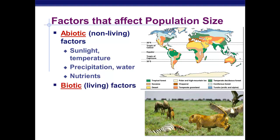There are also living things that can make a population bigger or smaller. This includes a lot of what you looked at before — interactions between species: food, competition, predators, and diseases. Now, diseases are not always caused by living things, but they often are, so disease could technically fit into both categories.